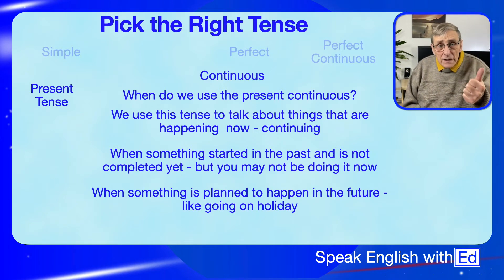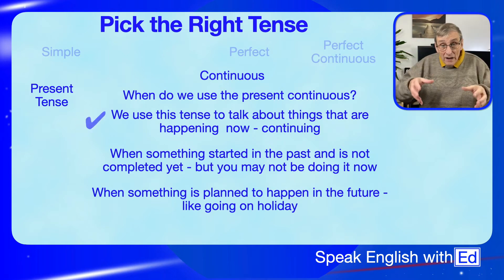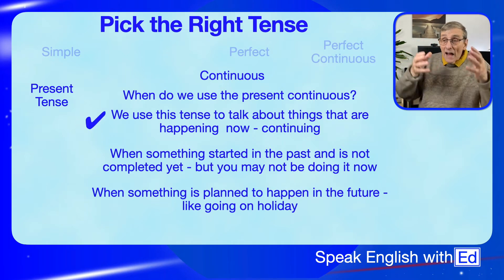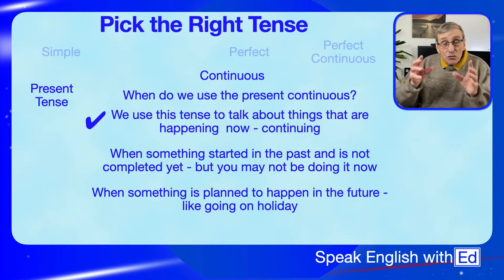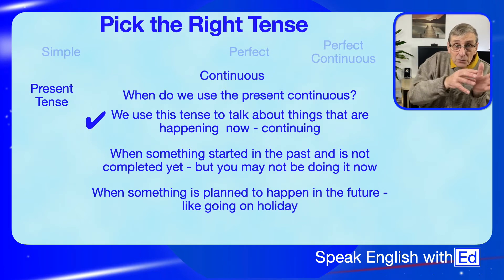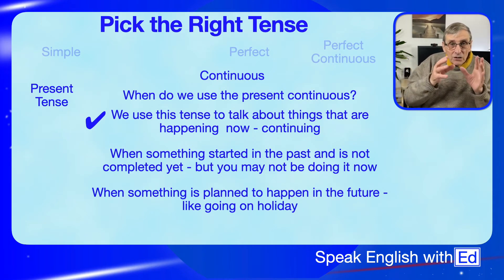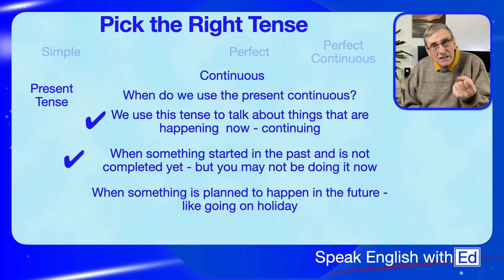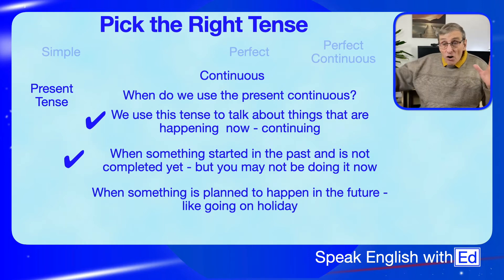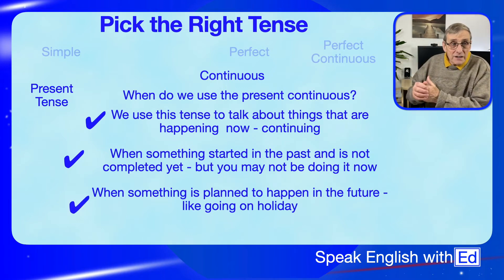To reiterate: we use the present continuous tense for what we're actually doing right now at this minute — you would say 'I'm watching a video.' You don't use the simple tense; you don't say 'I watch video,' you say 'I am watching a video.' You also use it for something started in the past that's ongoing, like building a house, and when something is planned for the future, like 'I'm going on my holidays next July' or 'we're going to the mother-in-law's for Christmas.'